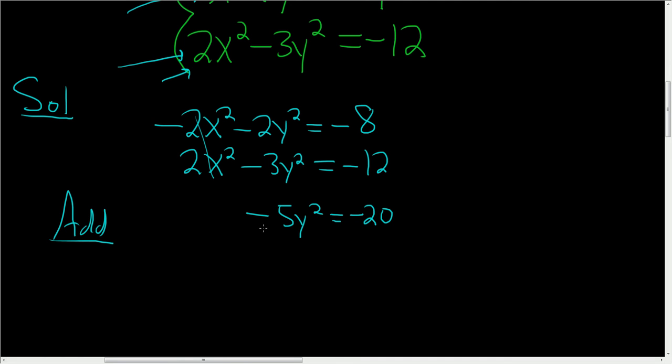To solve for y, we'll divide by negative 5. And that leaves us with y squared equals 4. And to solve this, we simply take the square root. And so we get y equals plus or minus 2.